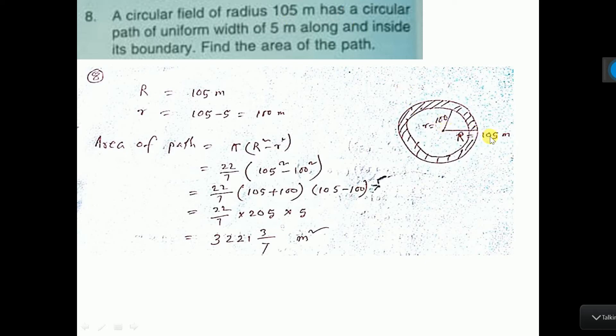See here I have written 105 meter, capital R I have considered, and it has a path of uniform width of 5 meter along inside the boundary. So this is 5 meter and one boundary is drawn.